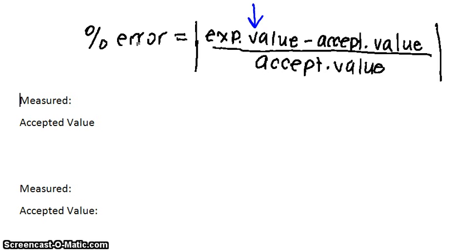minus the accepted value, which would be in a textbook or on the internet, all over the accepted value. These are absolute value brackets, which means that your answer can't be negative.